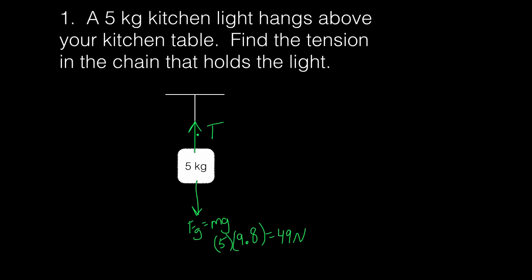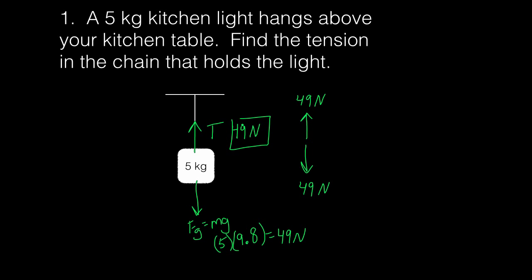The force pointing upward is the tension force, and I'm going to designate tension with a capital T. According to Newton's first law, if there's 49 newtons of force down, in order for this light to be at rest, there has to be 49 newtons of force upward. So the tension in the chain is 49 newtons.